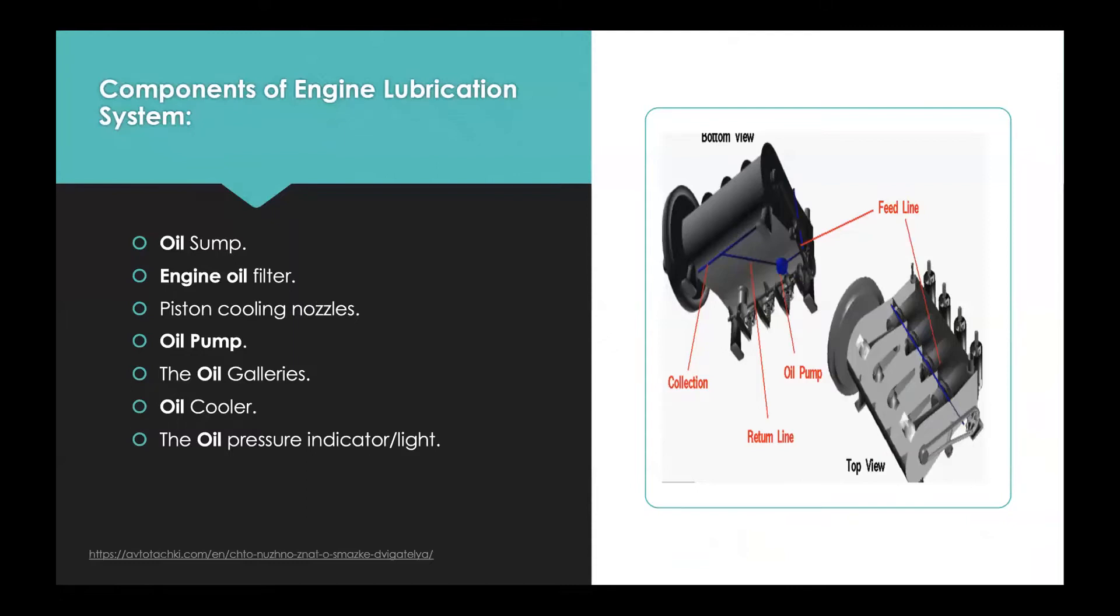Components of engine system as you can see: the oil sump, the engine oil filter, the piston cooling nozzles and oil pump, the oil galleries and oil coolers, and lastly the oil pressure indicator and light.